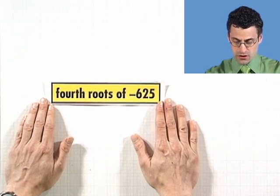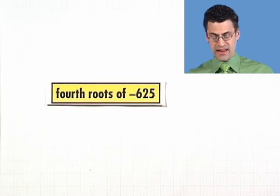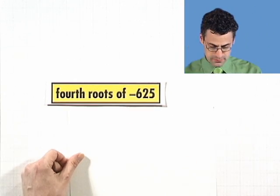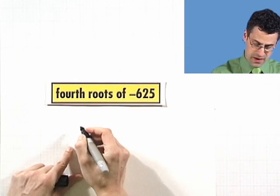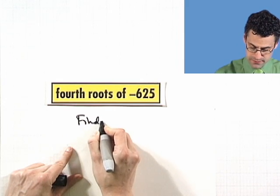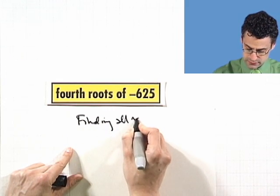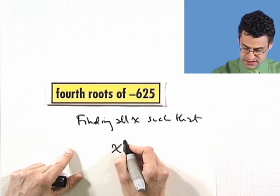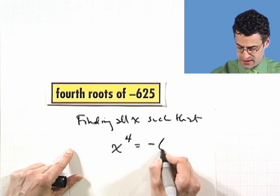Let's find all the fourth roots of negative 625. So here I want to find calling all x such that x to the fourth equals negative 625.